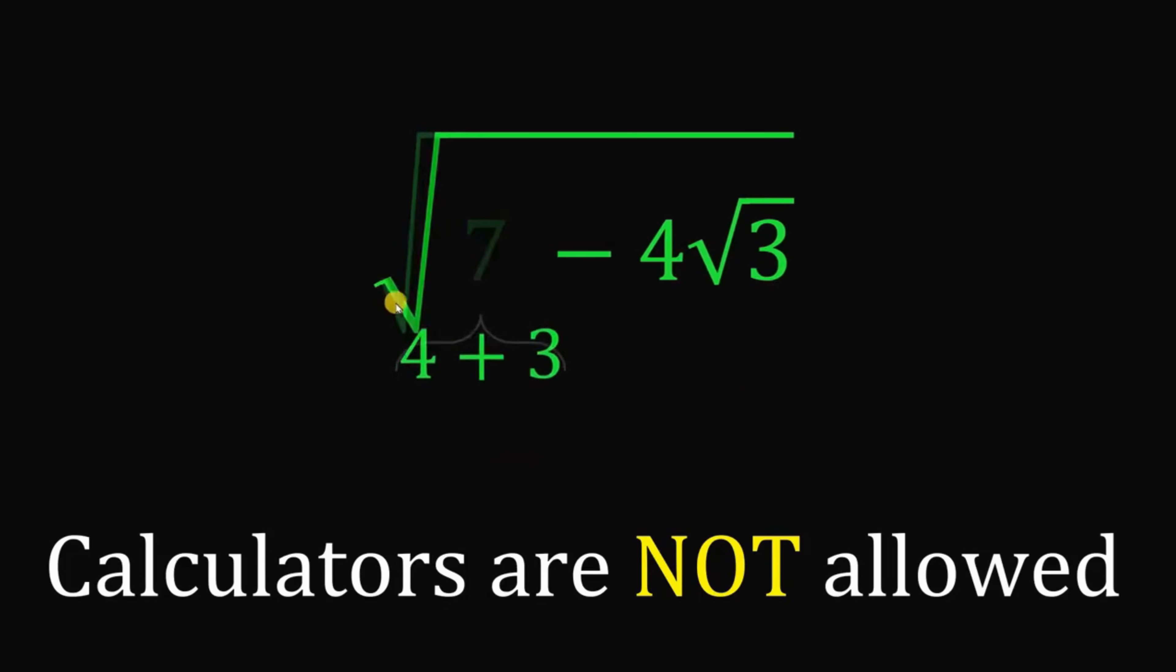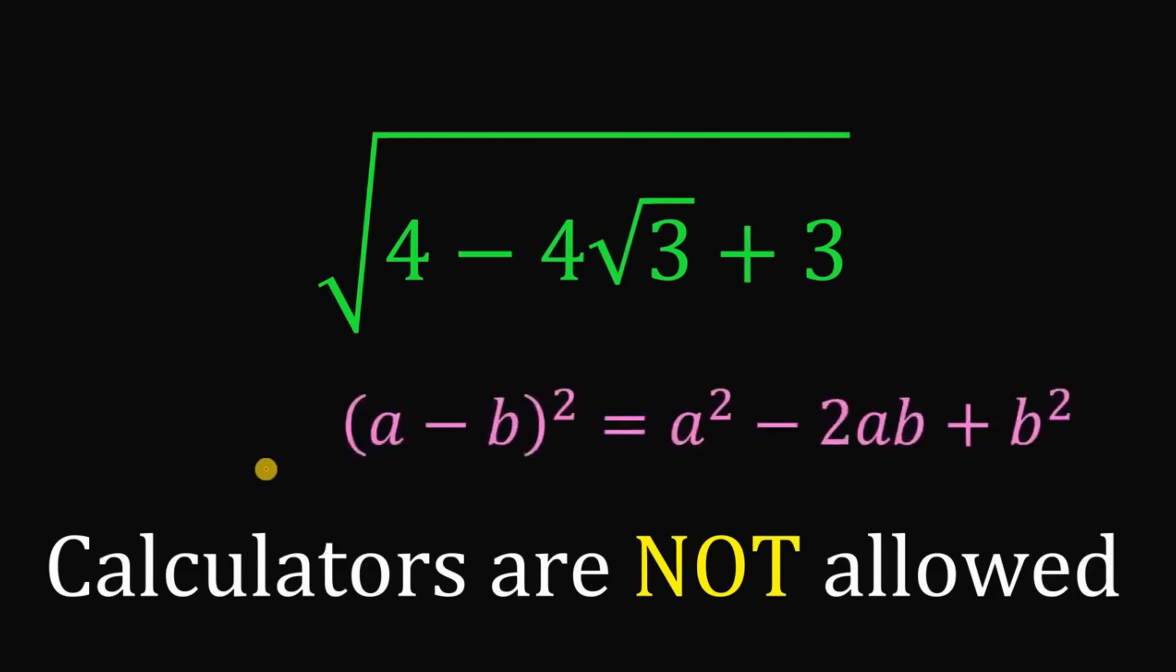Now, to see this, let's replace this 7 by 4 plus 3. And then, let's rearrange some terms a little bit. Now, we will use this identity: if we have a minus b quantity squared, it must be equal to a squared minus 2ab plus b squared.